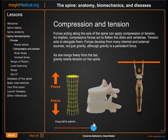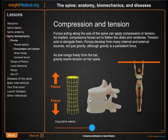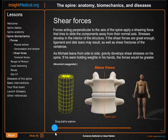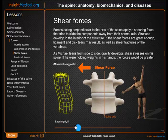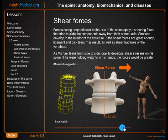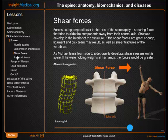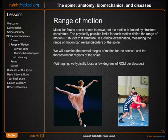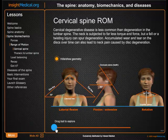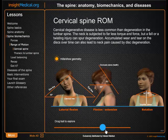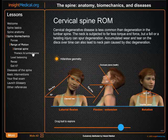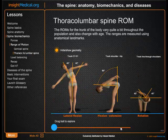We have a little story to tell about Jessica jumping up, and we look at the different forces that affect her spine during that motion. We again look at shear forces in the same way, torsional forces, range of motion, and load balancing. Here's range of motion of the cervical spine and the thoracolumbar spine.